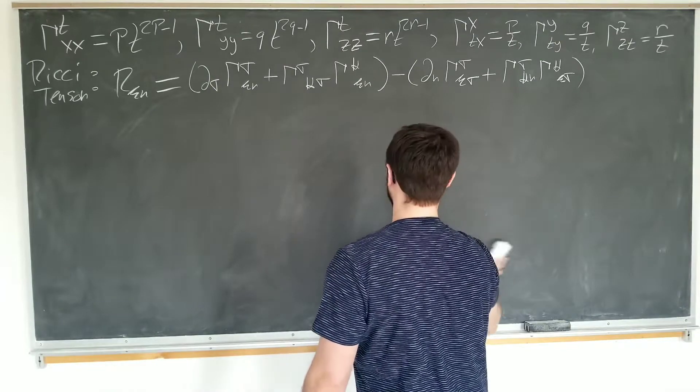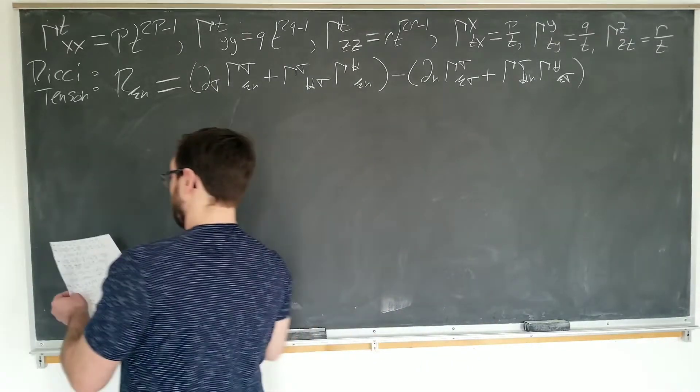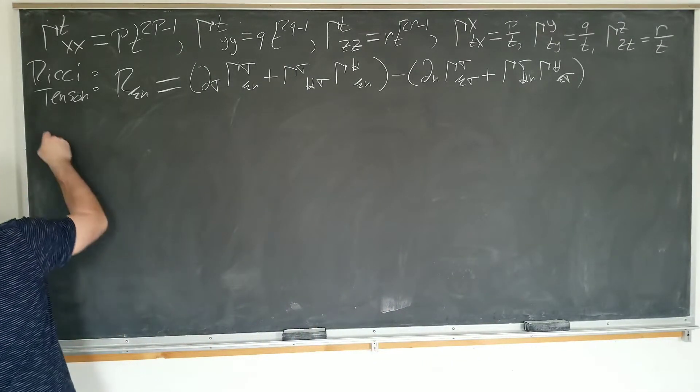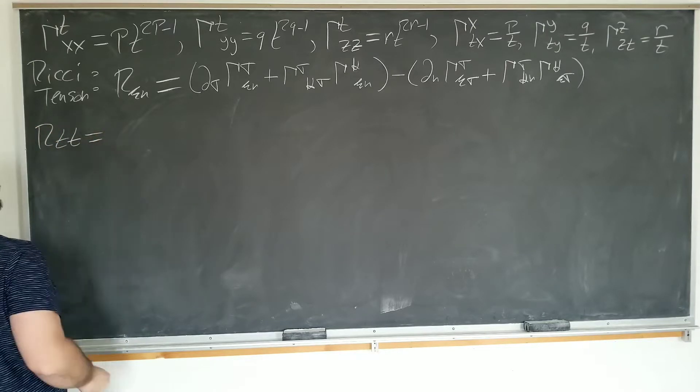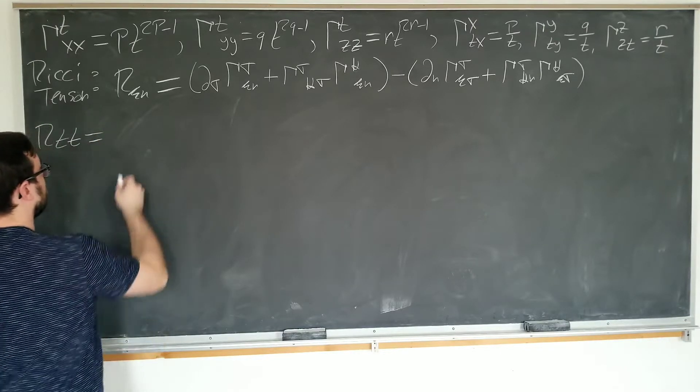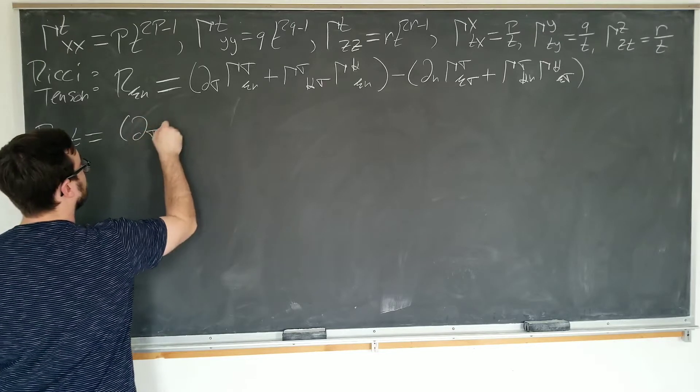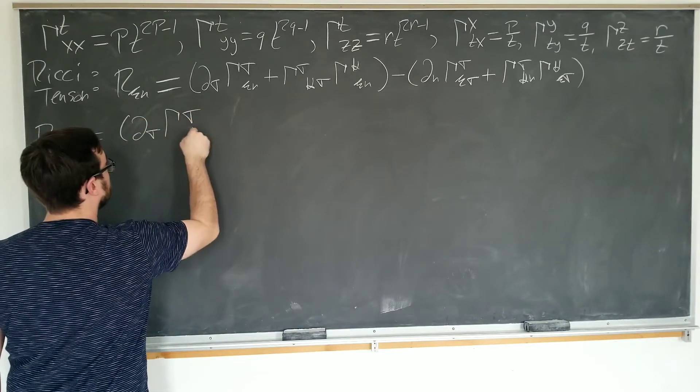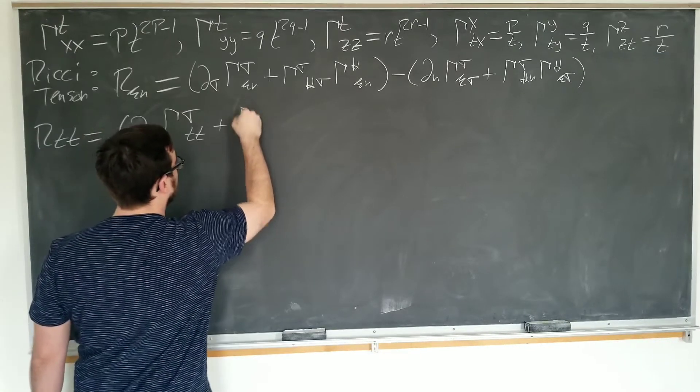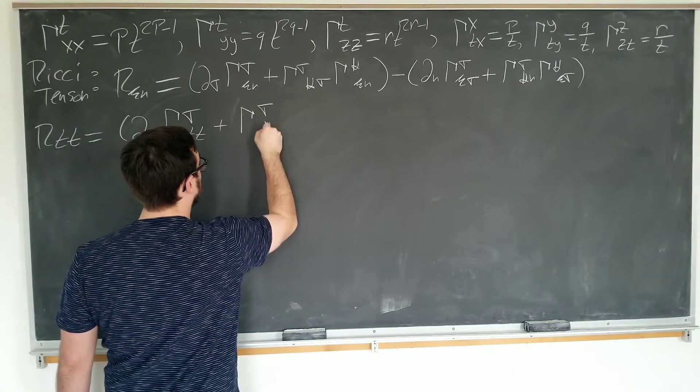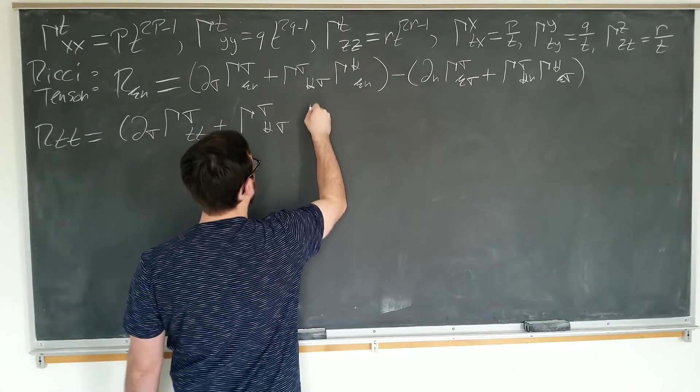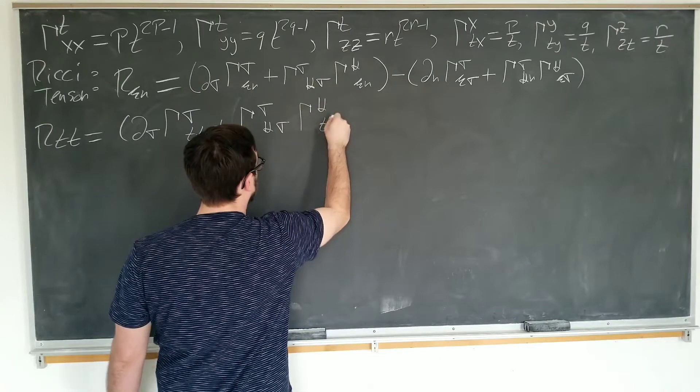Let us proceed. First non-zero entry. R_TT is, so we have mu and nu both being equal to T. D_sigma, gamma, sigma, t, t, plus gamma, sigma, kappa, summation indices, sigma, kappa, t, t,